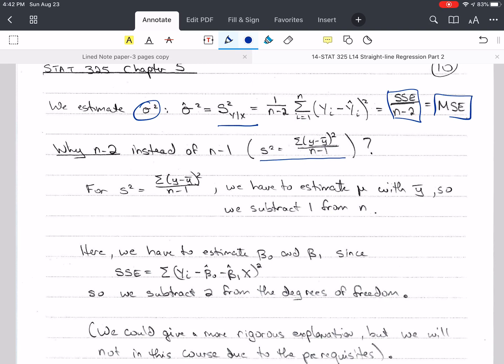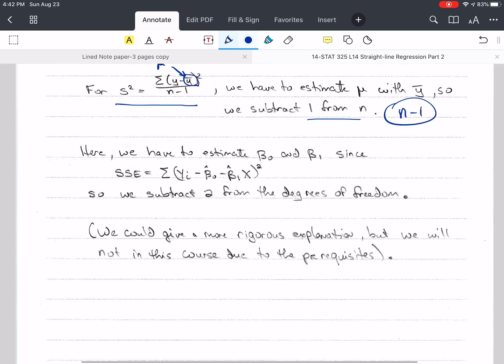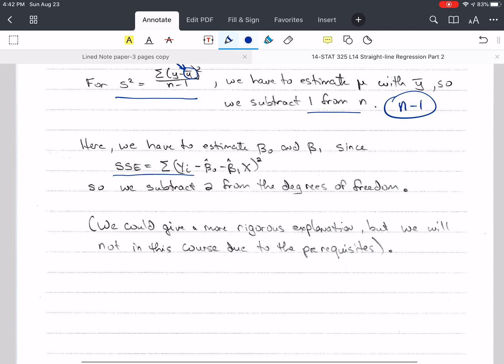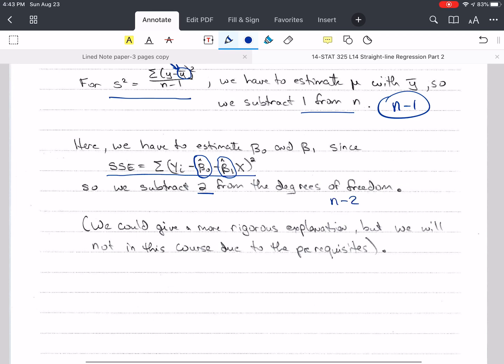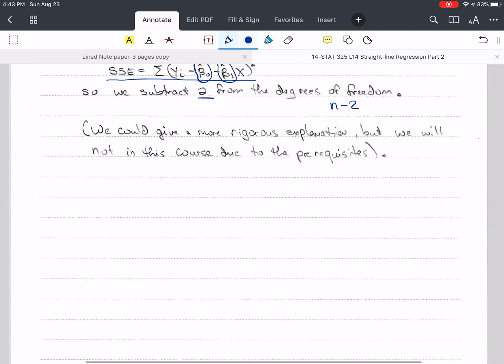Now, you may be wondering why we're dividing by n minus 2 instead of n minus 1 like we did for just a regular sample. Well, the reason is, in the regular sample, the only thing that we have to estimate is mu. We're estimating mu using y bar, and we end up subtracting 1 from n. But when you look at the equation of SSE and you plug in for y hat, you'll notice that we have to estimate both beta not hat and beta 1 hat. And so we have two things that we have to estimate. So we subtract 2 from the degrees of freedom, and that gives us n minus 2. There is a more rigorous explanation, but that is not for this course due to our prerequisites.